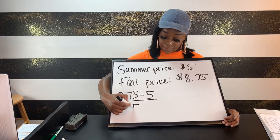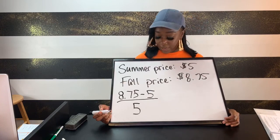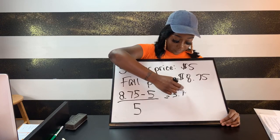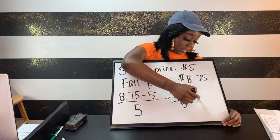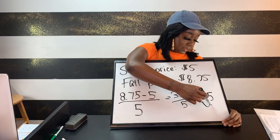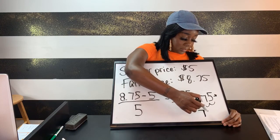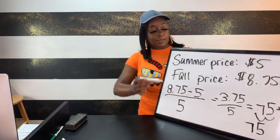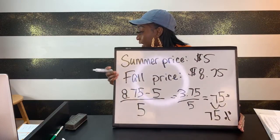So we're going to divide by five. If we do 8.75 minus 5, that gives us 3.75 divided by 5, which gives us 0.75. Then we move the decimal two places to the right, which gives us 75%.